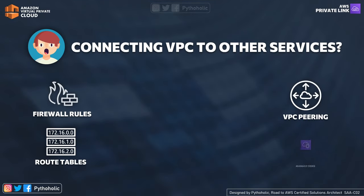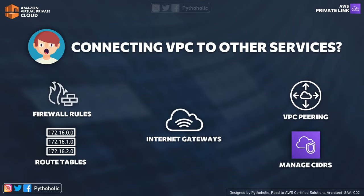With all the things that we have learned till now, when we think of connecting our VPC to access services across other VPCs, services hosted with a marketplace, or any other service appliance, our whole idea surrounds with: I need to add firewall rules, I need to have entries in the route table, I need to have a proper VPC peering connection, I need to manage the CIDR blocks to avoid conflicts, and I need an internet gateway for smooth access.